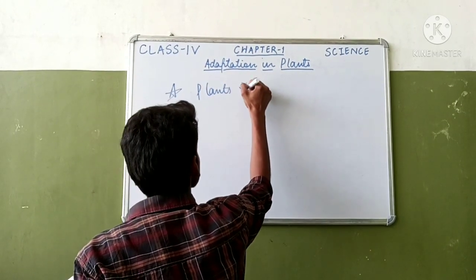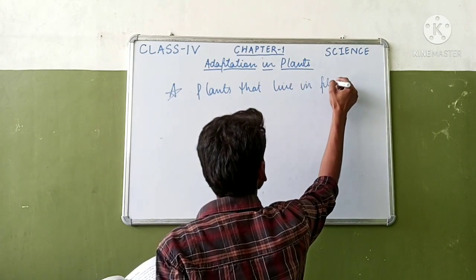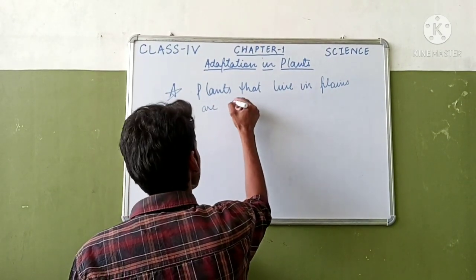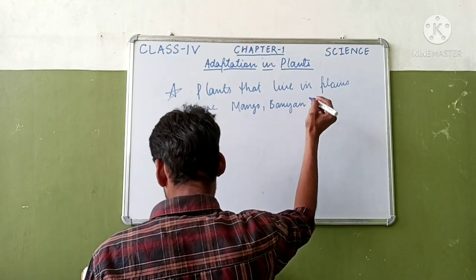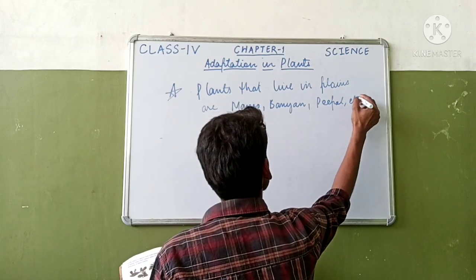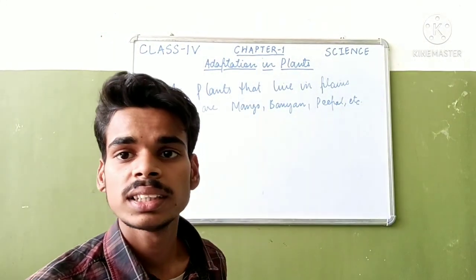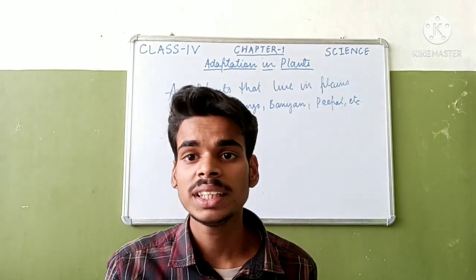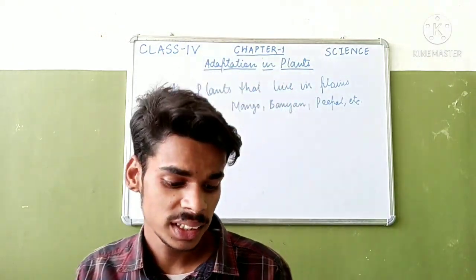Plants that live in plains are mango, banyan, peepal, etc. Plants that live in plains are very tall and strong, they have many branches, they can bear heat and give shade in hot summers. They receive sufficient rainfall.